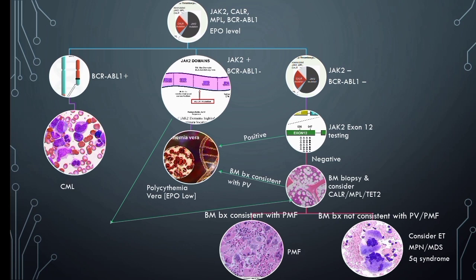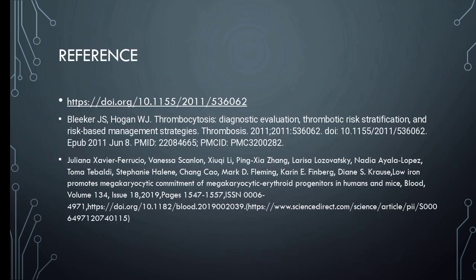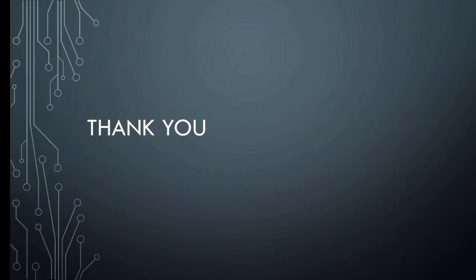Treatment approaches include cytoreductive therapy and antiplatelet therapy. In polycythemia vera, treatment includes phlebotomy to reduce hematocrit — the goal is hematocrit less than 42 percent in women and less than 45 percent in men. Other treatments include low-dose aspirin and cytoreductive treatment like hydroxyurea.